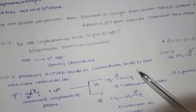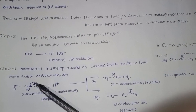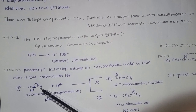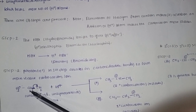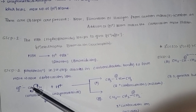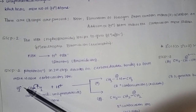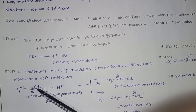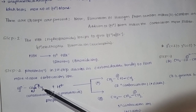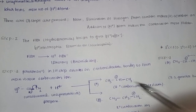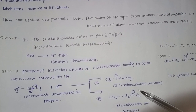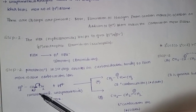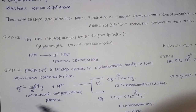This is the secondary carbocation, which is more stable. The primary carbocation is less stable. We will explain this using propene — an unsaturated, unsymmetrical molecule with 3 carbons and a double bond. The secondary carbon ion is more stable than the primary carbon ion.